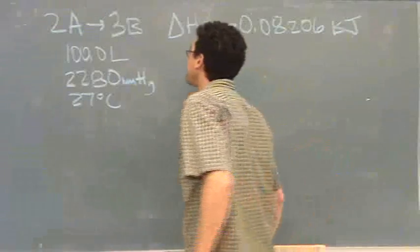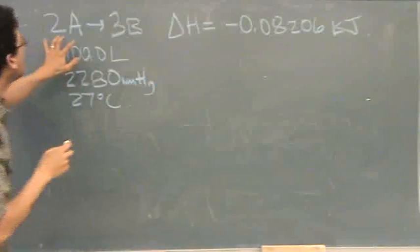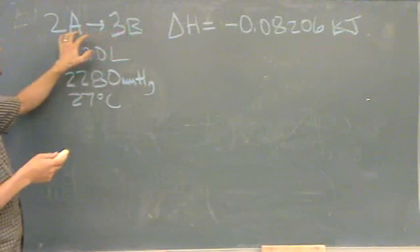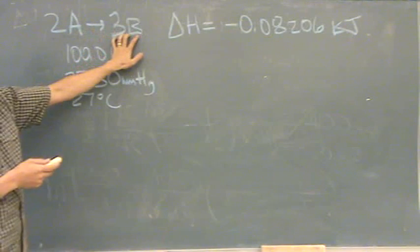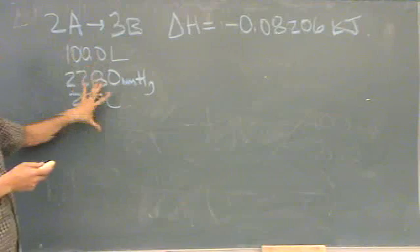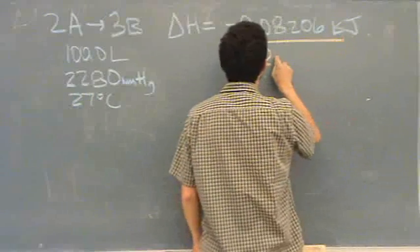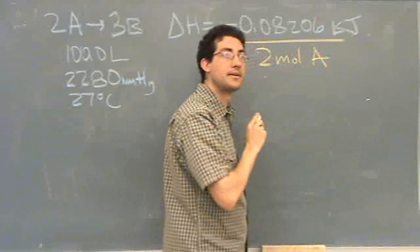So what you're going to do is take this delta H, and notice you can do a couple things with the molar ratio here. You can say it's per every 2 moles of A or per 3 moles of B. Well, since all this info is about A, I'm going to say this is per every 2 moles of A.